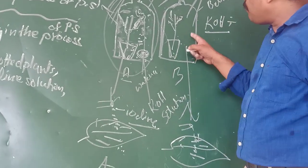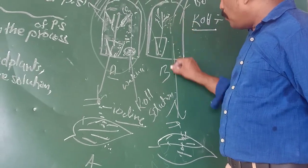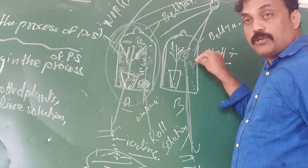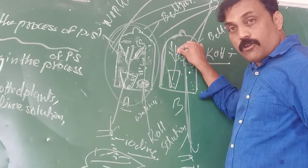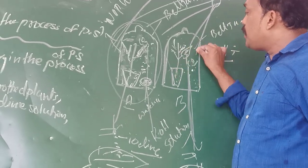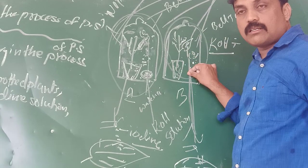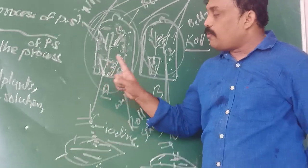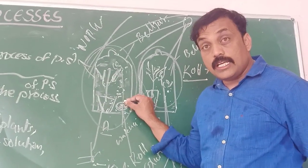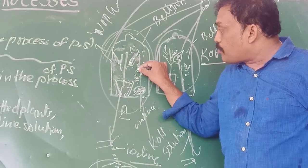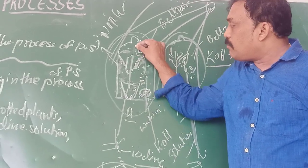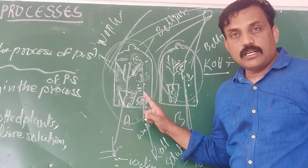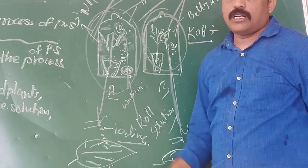In apparatus B, the leaf turns blue or blackish because sunlight is available, carbon dioxide is also available inside the bell jar, chlorophyll is present, and water is also there. All components are present, so photosynthesis occurs in apparatus B and starch is produced. This experiment concludes that carbon dioxide is necessary for photosynthesis. This is a very important experiment.